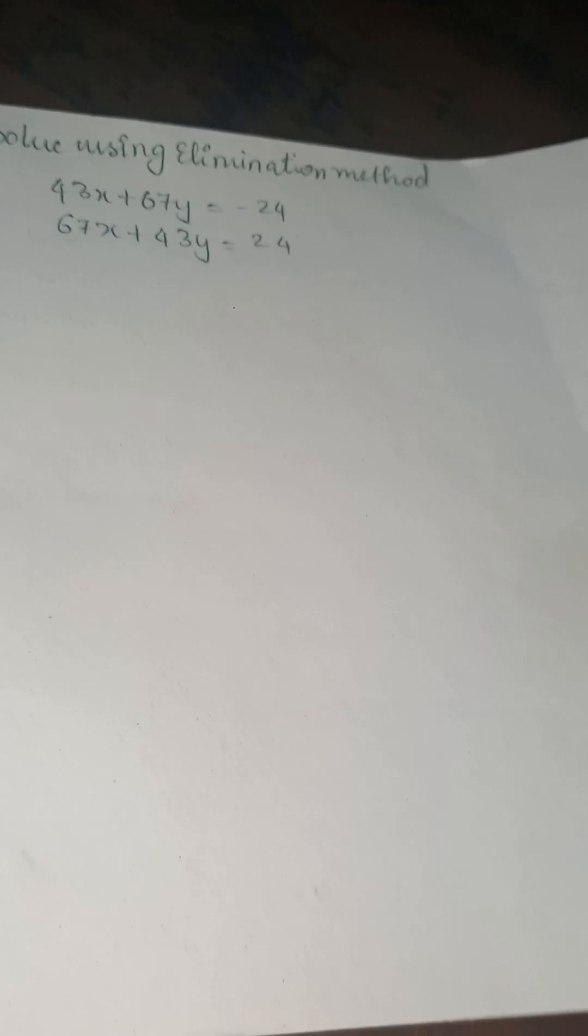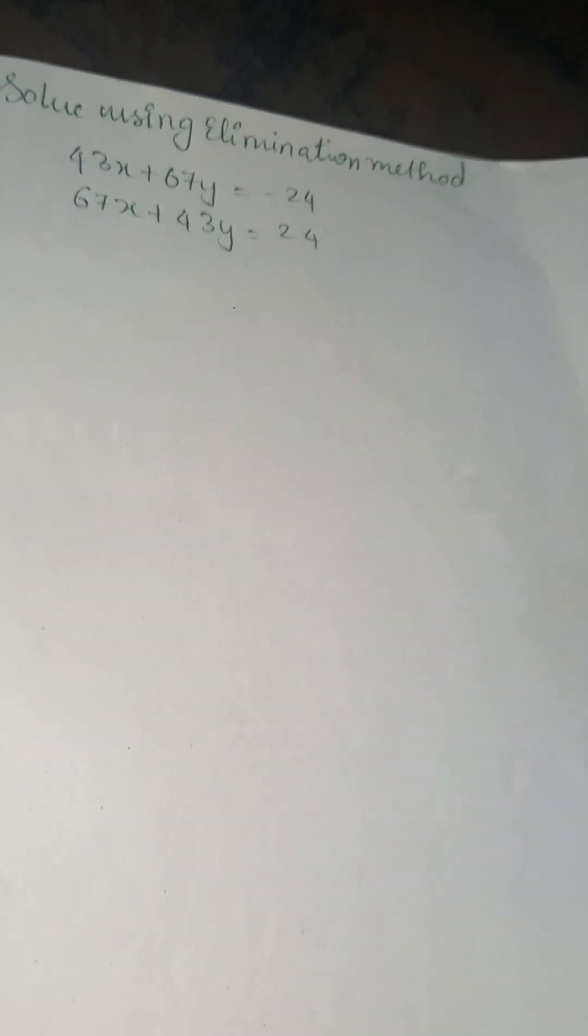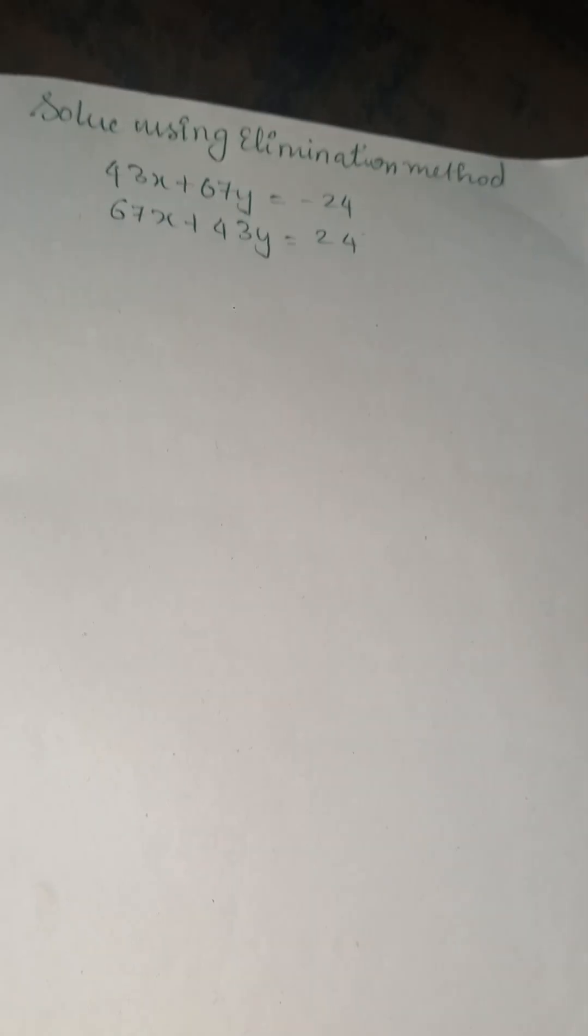This is going to be quite important and interesting. Solve using elimination method: 43x + 67y = -24 and 67x + 43y = 24. Now in this question you can observe one thing clearly.